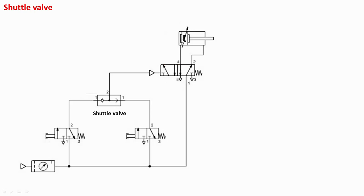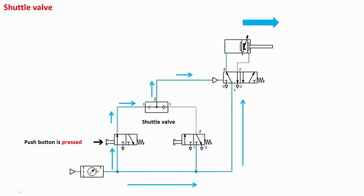Either valve can be operated to generate the pressure signal and to activate the left envelope mode of the five-by-two direction control valve, which in turn will operate this double acting cylinder. Suppose you press the push button of this valve — you will get the left envelope mode and air will be admitted. The ball, which was originally on one side, is now shifted to the right-hand side, blocking that port.